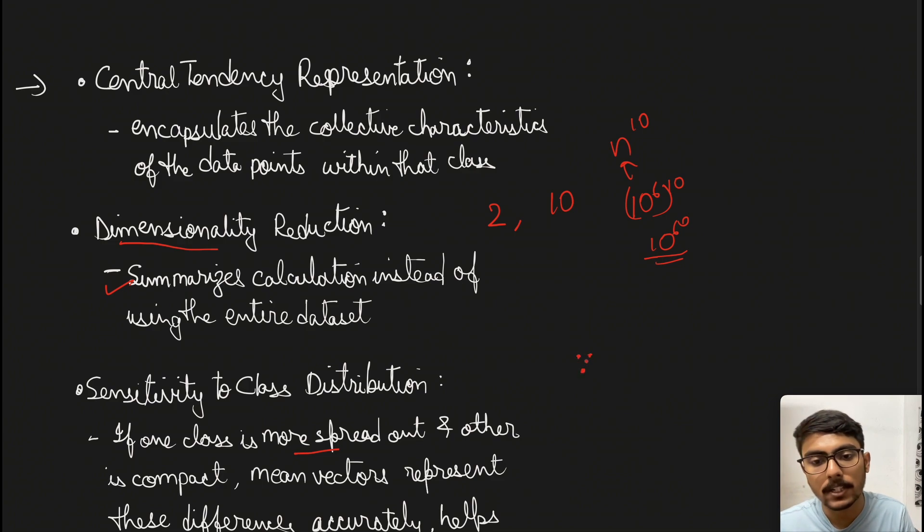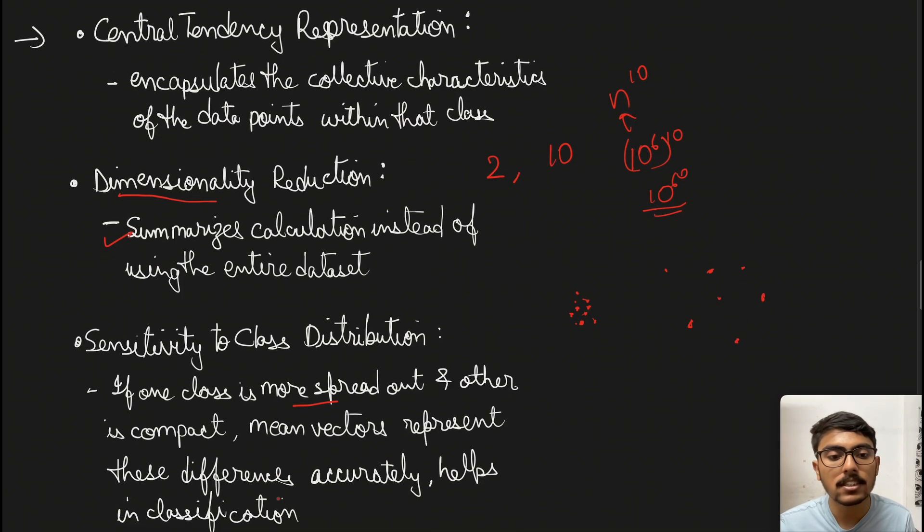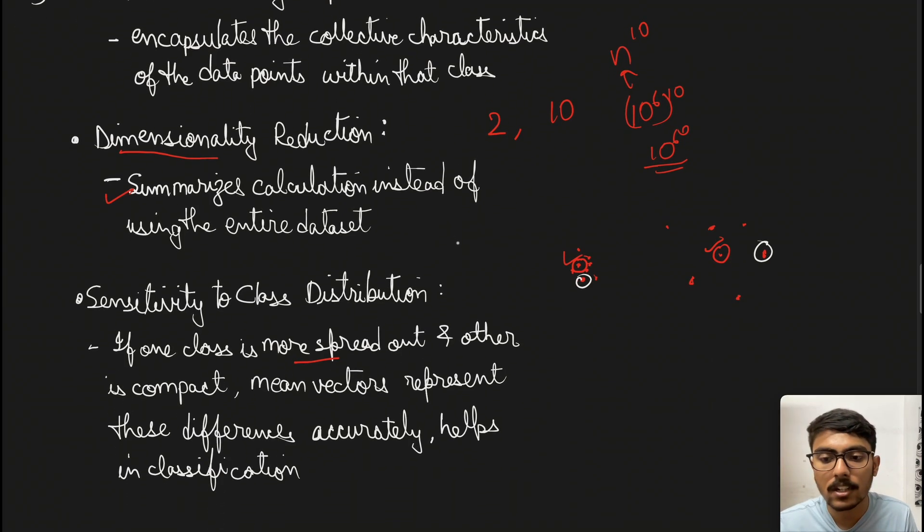It's written with an example. Suppose one class is spread like this and another class is spread like this. The mean vectors represent these differences accurately. In both cases, the mean consolidates all pattern vectors in each class. If we're taking any random point like this, we cannot draw the decision boundary - we'd be confused where to draw. That's why we're taking the mean vector.